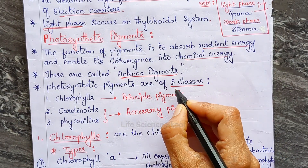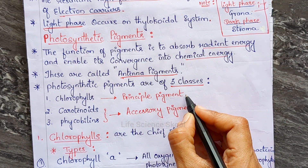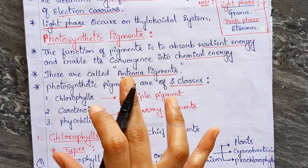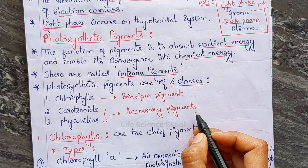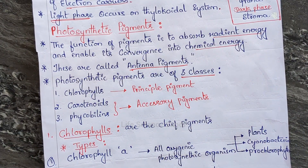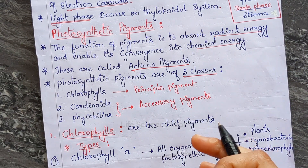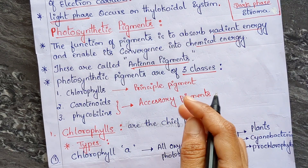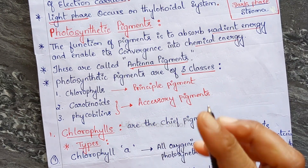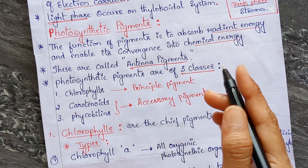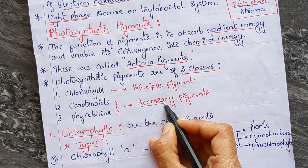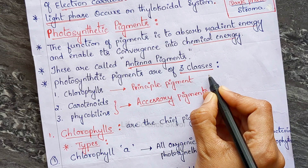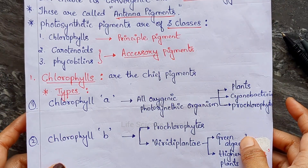The photosynthetic pigments are of three classes: first, chlorophylls — the principal pigment; second, carotenoids; third, phycobillins. Carotenoids and phycobillins are accessory pigments. Chlorophyll is the main pigment that absorbs sunlight. Carotenoids and phycobillins are accessory pigments because they are also light-absorbing compounds that help the plant absorb light at different wavelengths, and they assist the principal pigments.